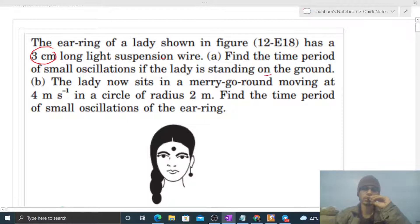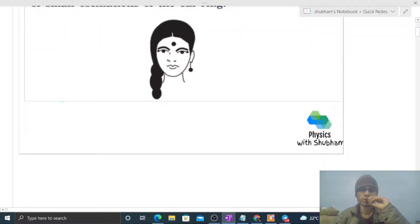So this earring of the lady, we can compare it with a simple pendulum like this. The length of the pendulum will be 3 centimeter, and we have to find out the time period of this simple pendulum because the earring is nothing but a kind of simple pendulum.